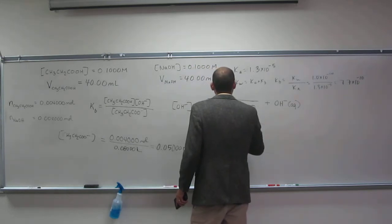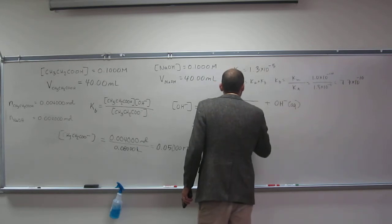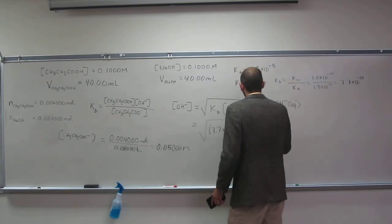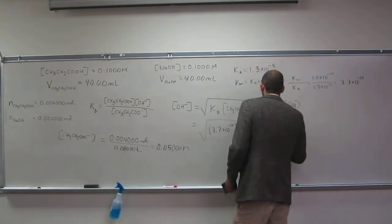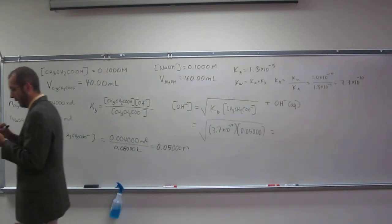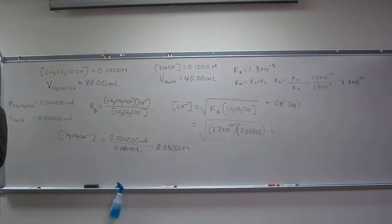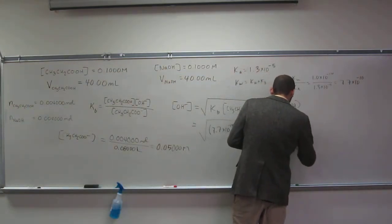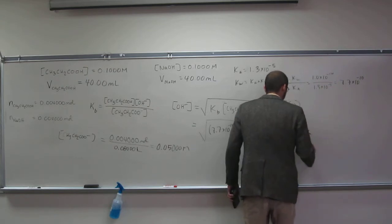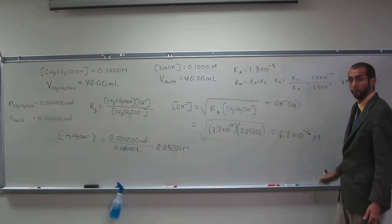So KB here: 7.7 times 10 to the negative 10 times 0.05000. And when I do the square root I get 6.2 times 10 to the negative 6 molar OH minus.